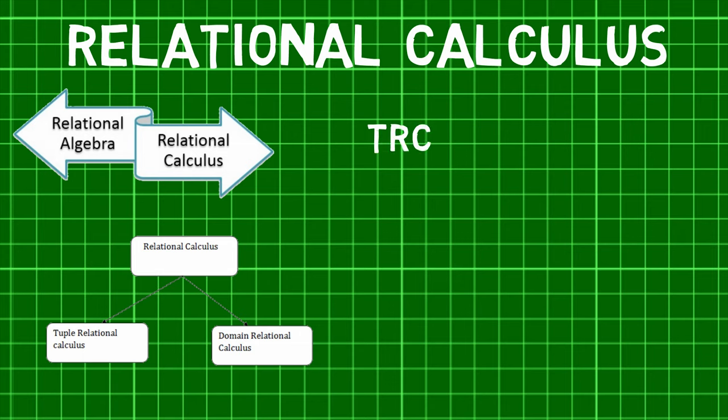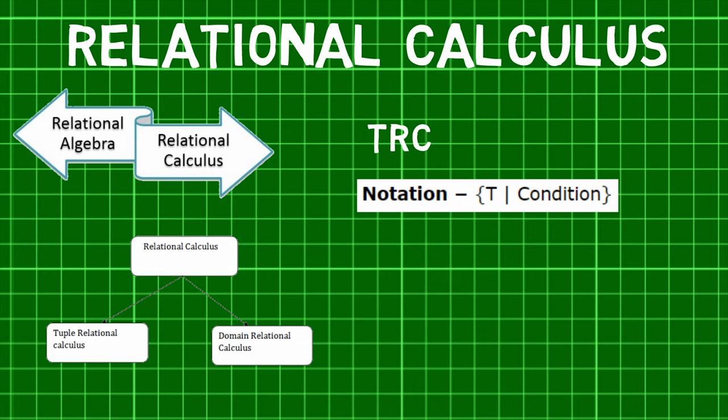In TRC, the filtering variable ranges over tuples. It has the following notation which returns all tuples t that satisfy the condition.